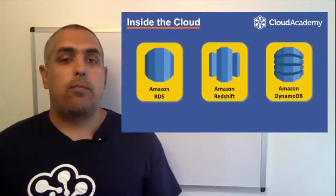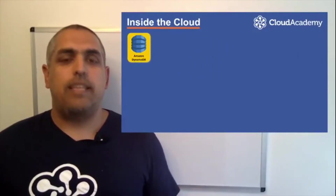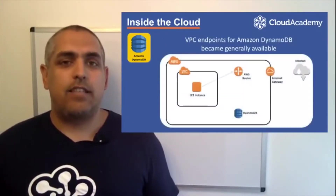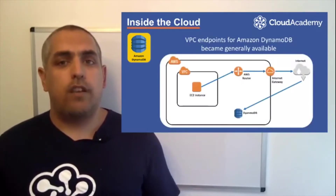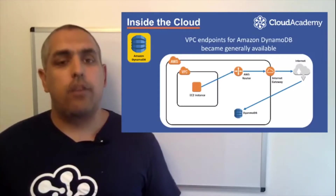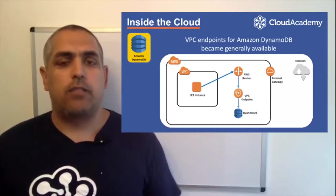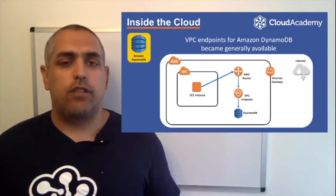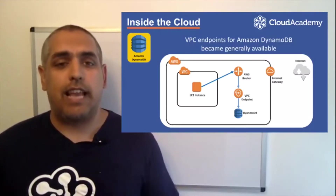Firstly, a couple of points on Amazon DynamoDB. On the 16th of August, VPC endpoints became generally available. Prior to this, connectivity from your instances within your VPC to DynamoDB would have had to traverse the internet via an internet gateway, Direct Connect, or VPN solution. The new endpoints now enable you to create a private connection between your VPC and AWS services without going over the internet. Instead, all traffic is routed via the existing AWS global infrastructure, keeping traffic inside the AWS cloud.